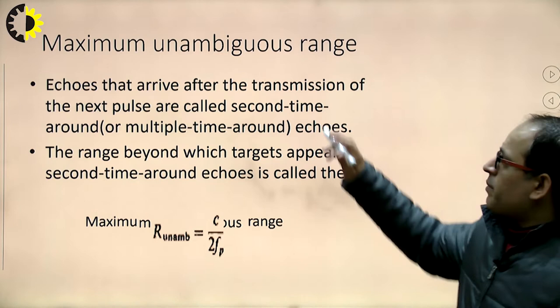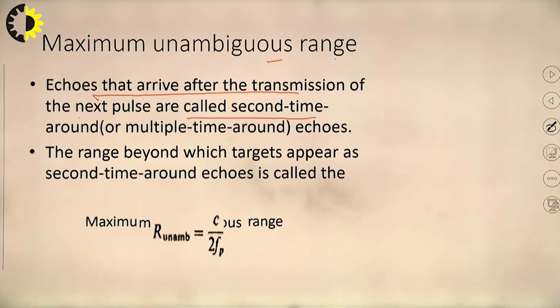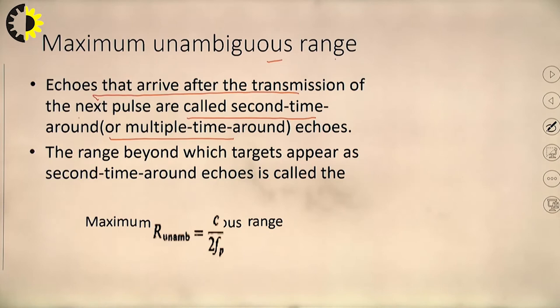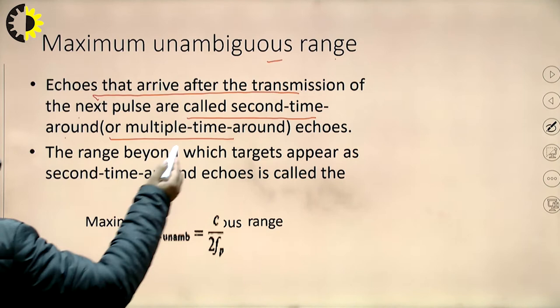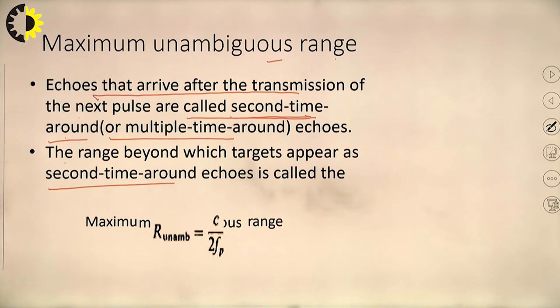Maximum unambiguous range: echoes that arrive after the transmission of the next pulse are called second-time-around or multiple-time-around echoes. The range beyond which targets appear as second-time-around echoes is known as the maximum unambiguous range.